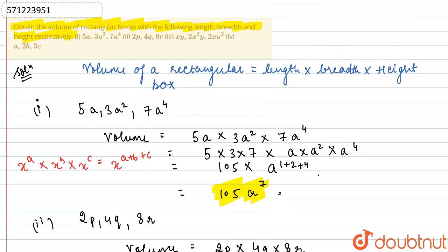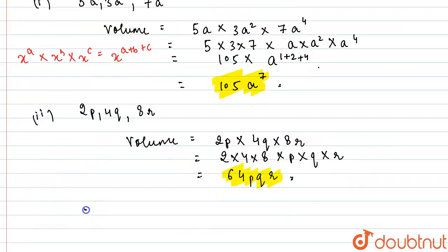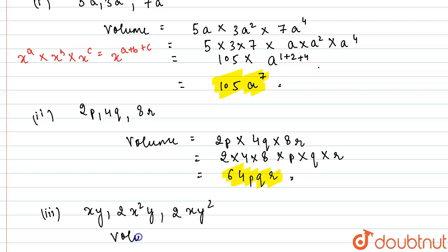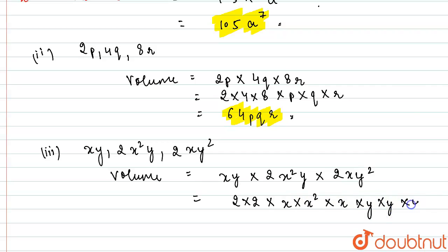The third part is: xy, 2x²y, 2xy². The volume will be equal to xy × 2x²y × 2xy². Writing the like terms together: 2 × 2, multiplied by x × x² × x, multiplied by y × y × y². 2 × 2 gives 4.